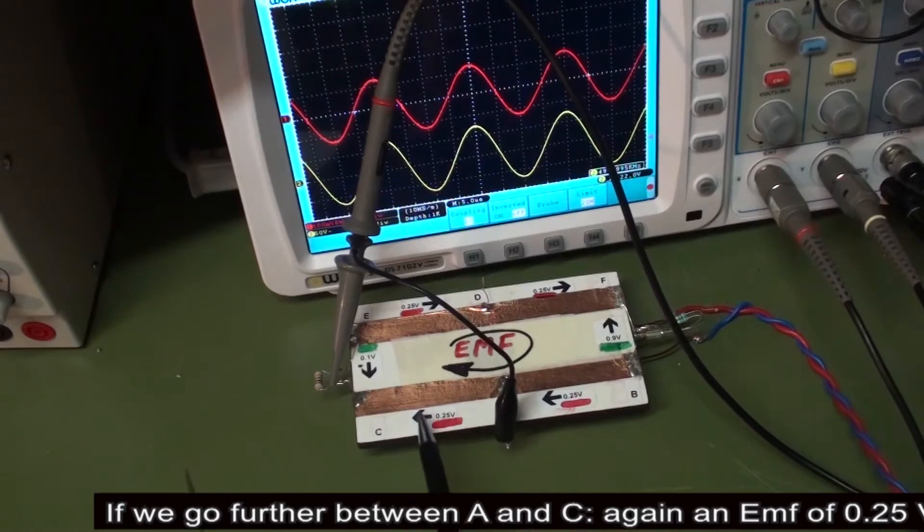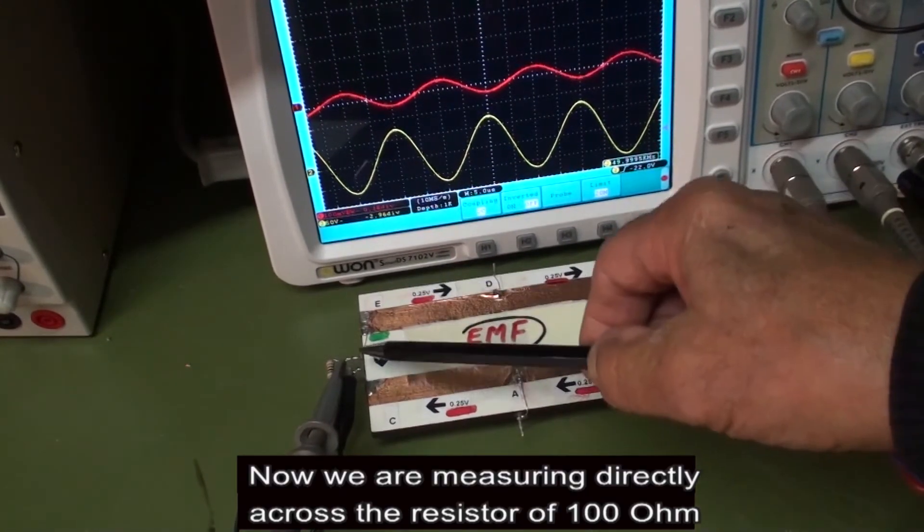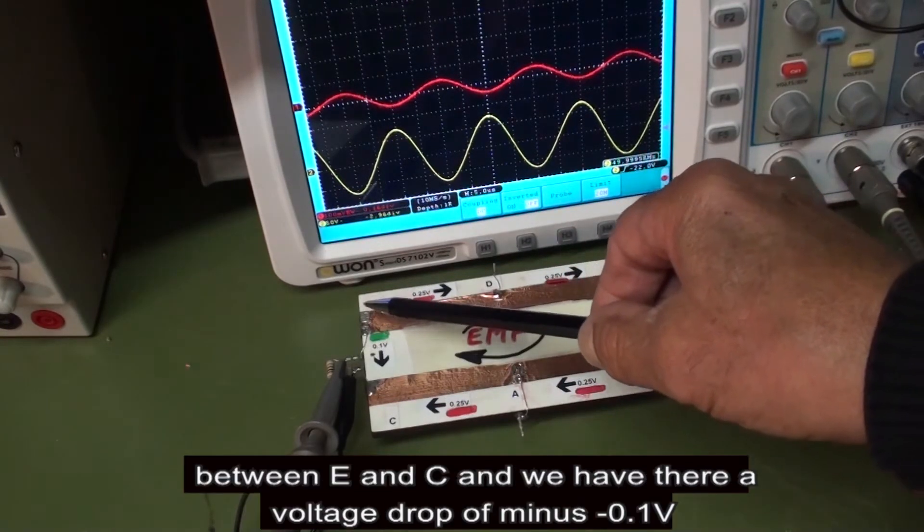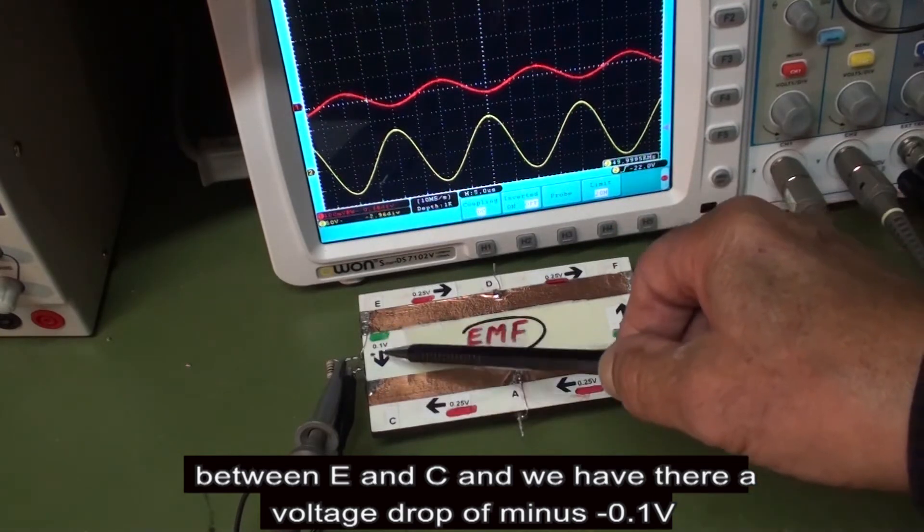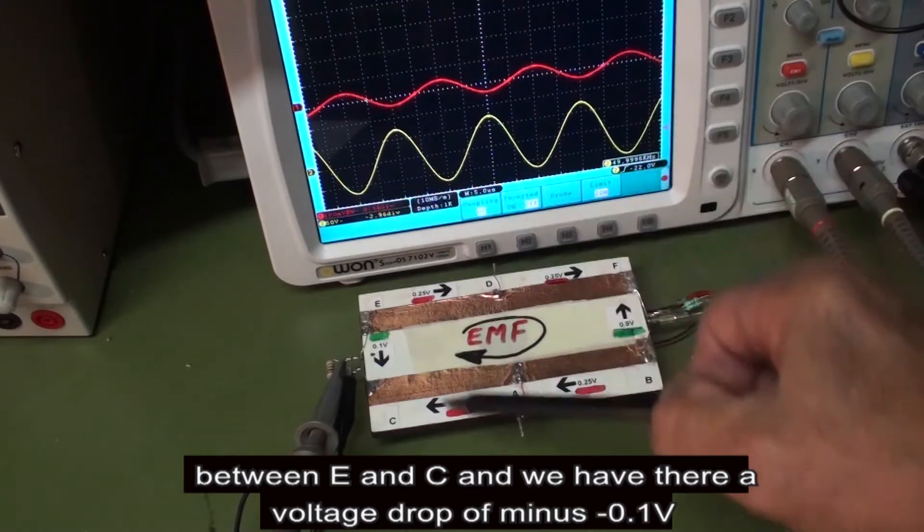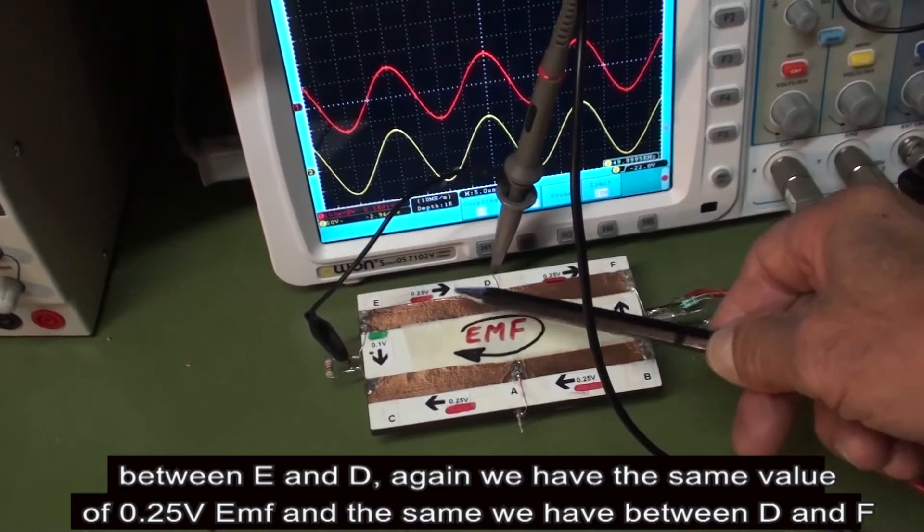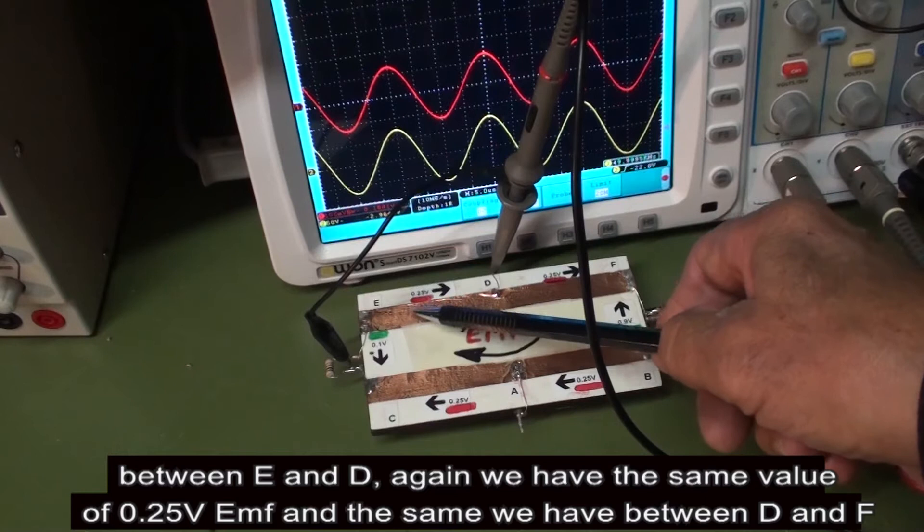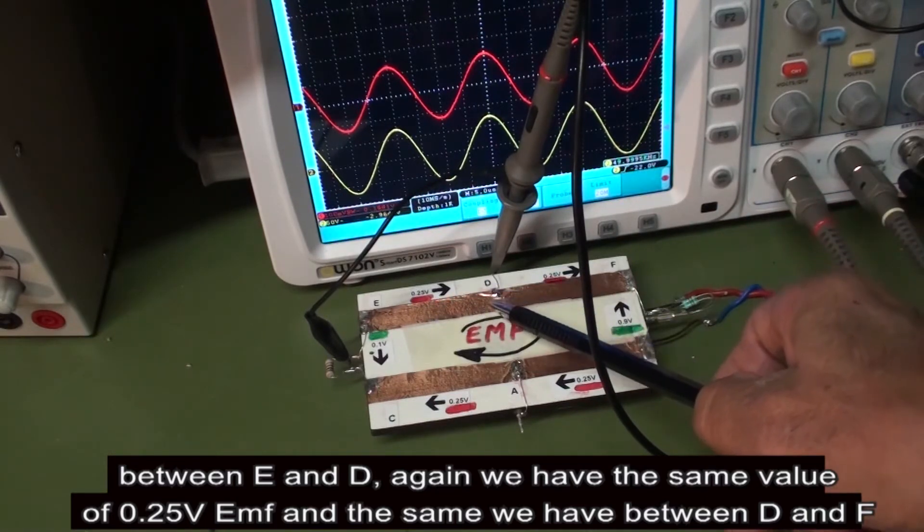This is the first EMF that we are measuring. If we go further between A and C, again we have another EMF of 0.25 volts. Now we are measuring directly across the resistor of 100 ohms between the points A and C, and we have the voltage drop of minus 0.1 volts. Between E and D again we have 0.25 volts EMF, and the same between D and F.